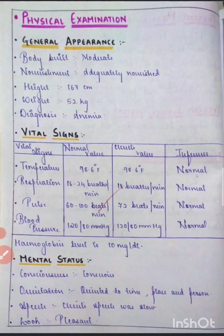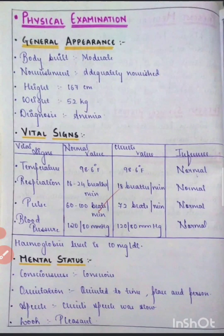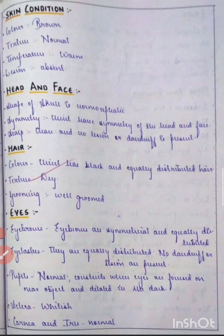Then you'll have to do the physical examination. In that, you'll have to mention the general appearance and also calculate the BMI. Then comes the vital signs — in vital signs you can also mention the hemoglobin level.